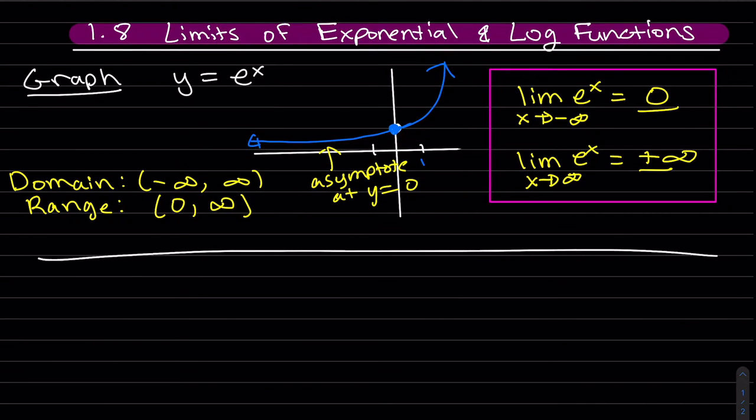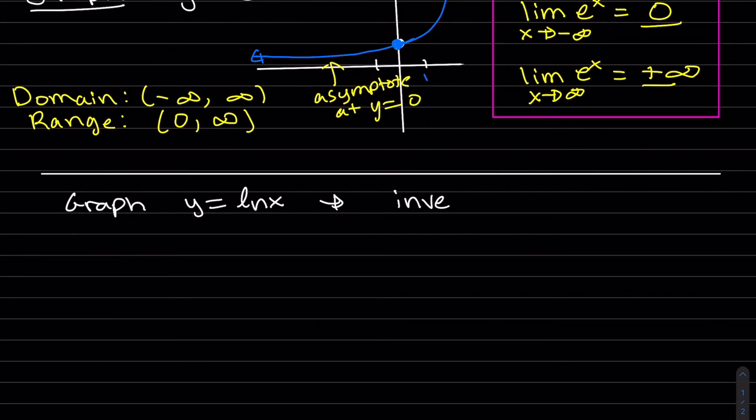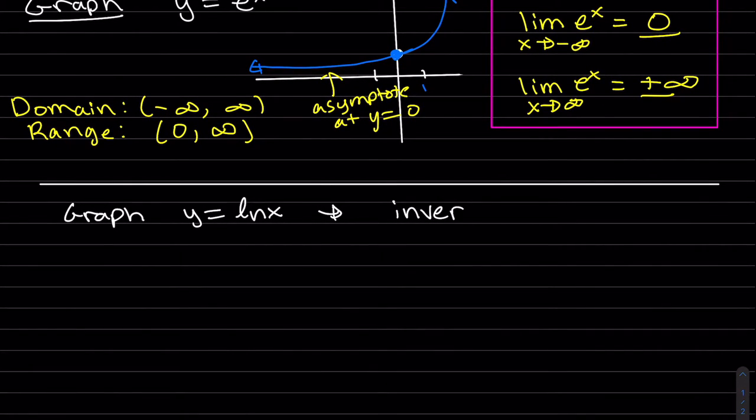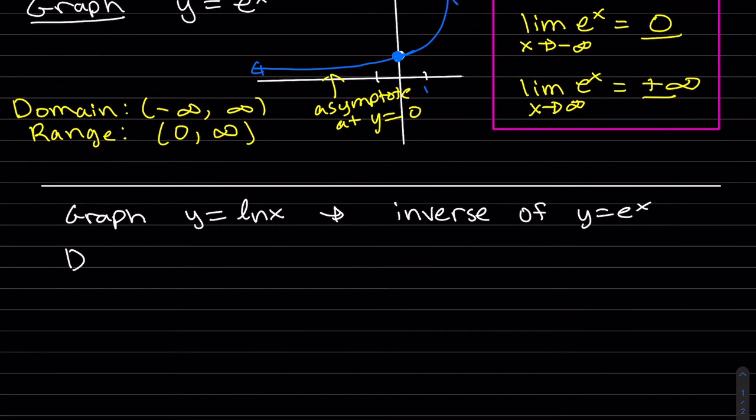Now the inverse. Logs and exponentials are inverses of each other. So right off the bat, we know the domain and range are exchanged. Domain is the range. And the range is the domain.